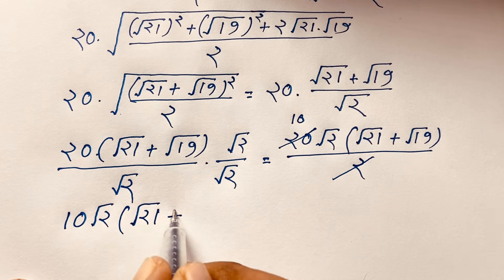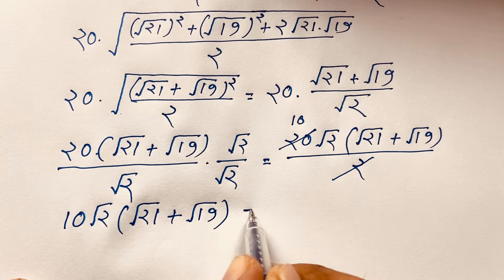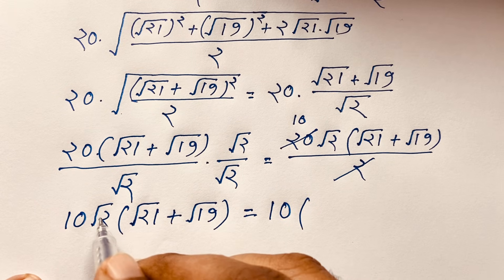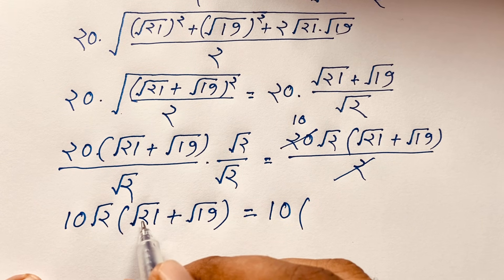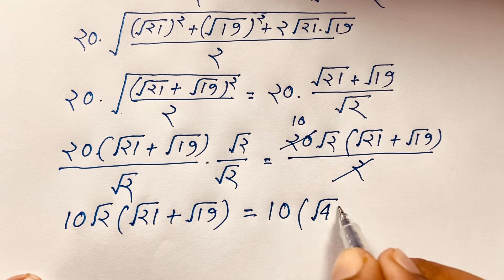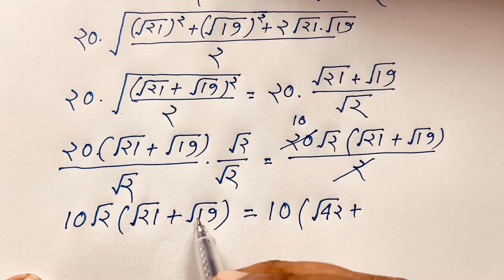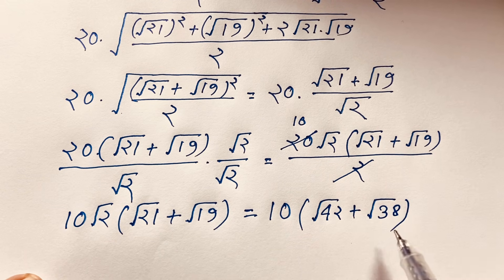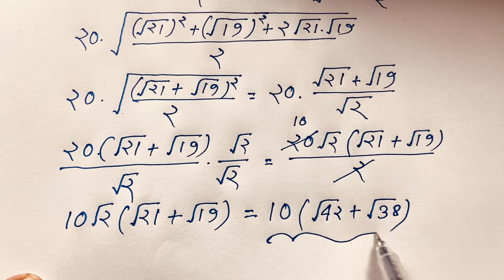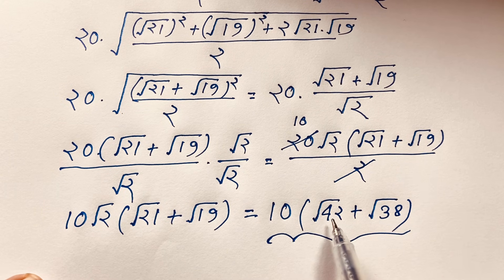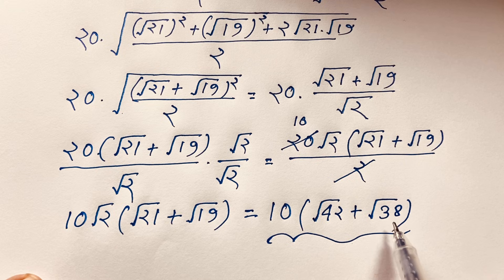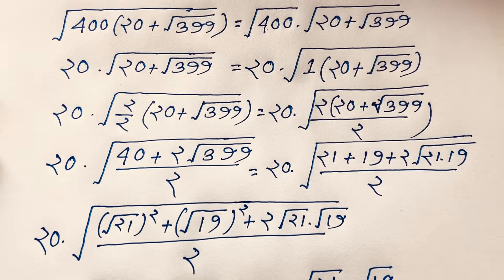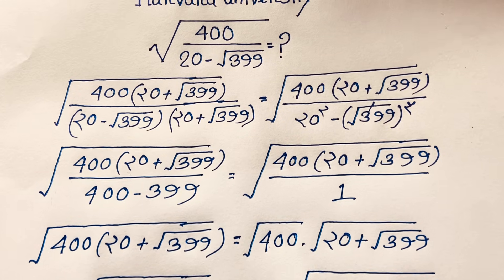So we get 10 times square root of 2 times (square root of 21 plus square root of 19). Multiplying through: square root of 2 times square root of 21 equals square root of 42, and square root of 2 times square root of 19 equals square root of 38. So the final simplified answer is 10 times (square root of 42 plus square root of 38). Thank you all — if you enjoyed this math problem, please subscribe to my channel. Goodbye, take care everyone!